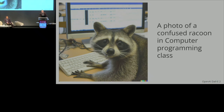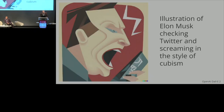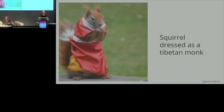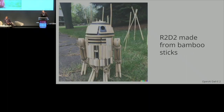This same AI can generate photographs. This is not a real photograph — it's not cut and pasted from anywhere. It is generated pixel by pixel and grown into a viable image based on just that prompt. Here's an illustration-style image of Elon Musk checking Twitter — if you saw that in the New Yorker, you would not think it was out of place. Here's academic researchers before a deadline in the style of Edvard Munch — he's the guy who made The Scream. A squirrel dressed as a Tibetan monk. R2-D2 made from bamboo sticks — this doesn't exist. Generated in seconds.